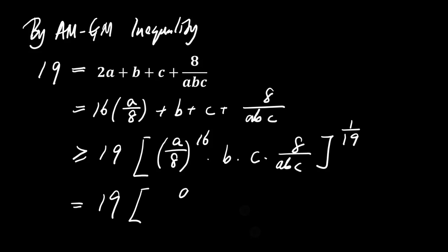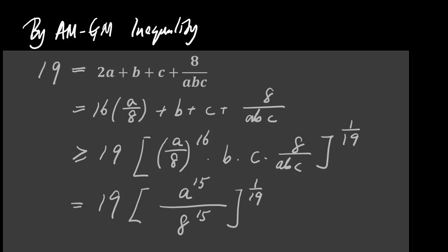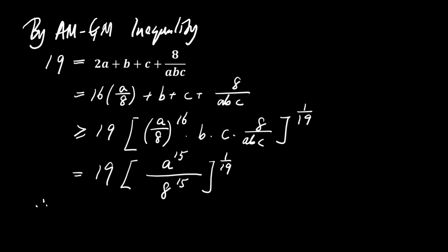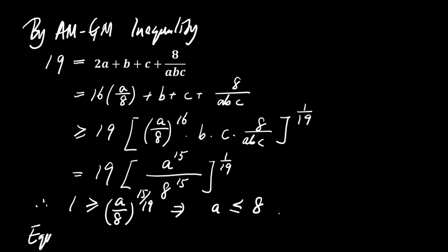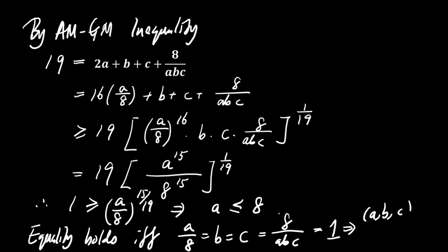Simplifying further, we get 19 times the product of A to the power of 15, divided by 8 to the power of 15, all raised to the power of 1/19. This simplifies to 1 ≥ A/8, which means A must be less than or equal to 8. Equality holds when A/8 = B = C = 8/(ABC), giving us the values A = 8, B = 1, and C = 1, respectively.